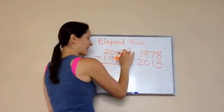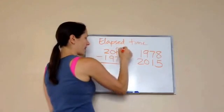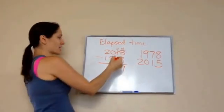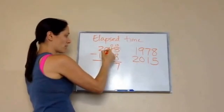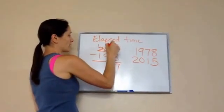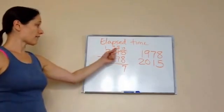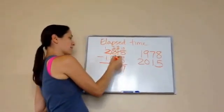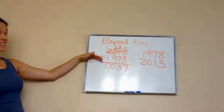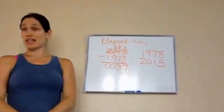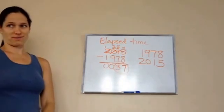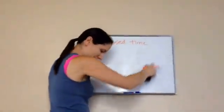Let's do the math: 2015 minus 1978. I cannot take 8 from 5, so I have to borrow — bring over 15. So 8 from 15 is 7. Then I need to take from 0 and can't, so I borrow across, bringing 10, and then this gives the next column 10. 7 from 10 is 3. Take away 9 is nothing — wait, that gives 1. Take away 1 is nothing. So how much time has elapsed from 1978 to 2015? 37 years has elapsed. So I am 37 years old.